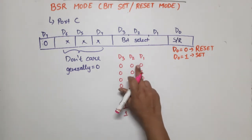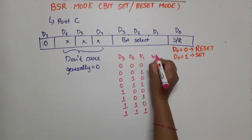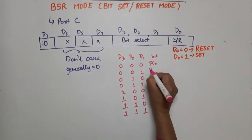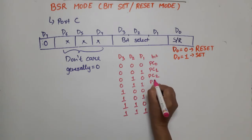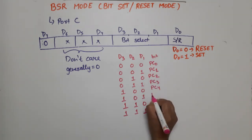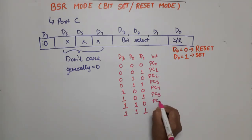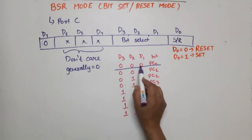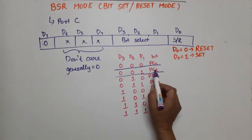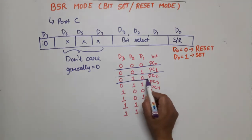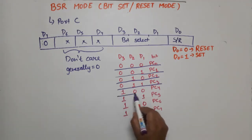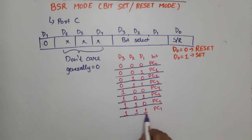The weight 000 selects PC0, 001 selects PC1, 010 selects PC2, 011 selects PC3, 100 selects PC4, 101 selects PC5, 110 selects PC6, and 111 selects PC7. So for bit 0 of port C, D3 D2 D1 = 0 0 0; for bit 1, D3 D2 D1 = 0 0 1; for bit 3 of port C, D3 D2 D1 = 0 1 1.